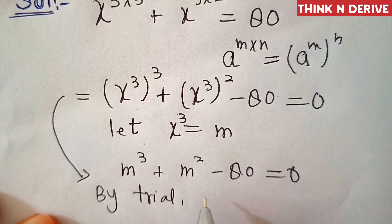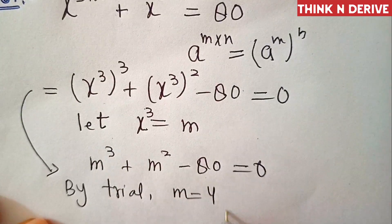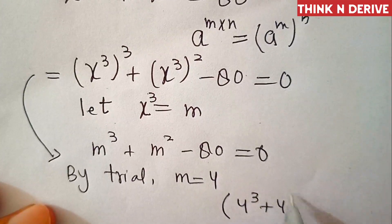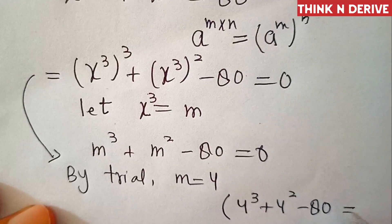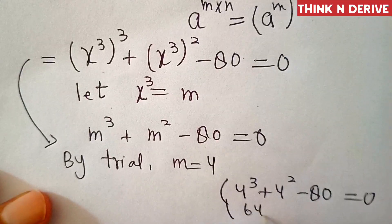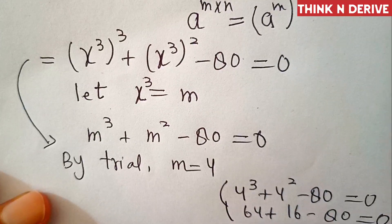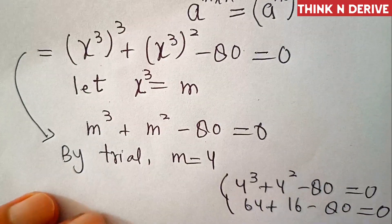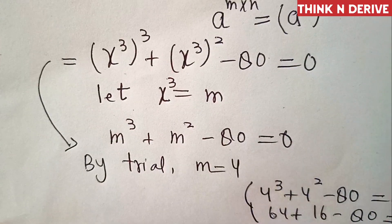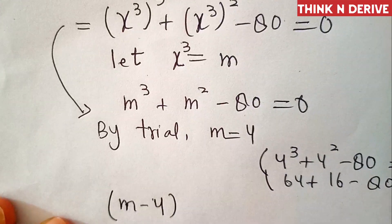If we put m equal to 4, this equation will become 4 cube plus 4 square minus 80 equal to 0. That is, 4 cube is 64, plus 16, minus 80 equal to 0, which is 64 plus 16 is 80, minus 80 is equal to 0. Hence m equal to 4 is one of its solutions, meaning m minus 4 is one of its factors.